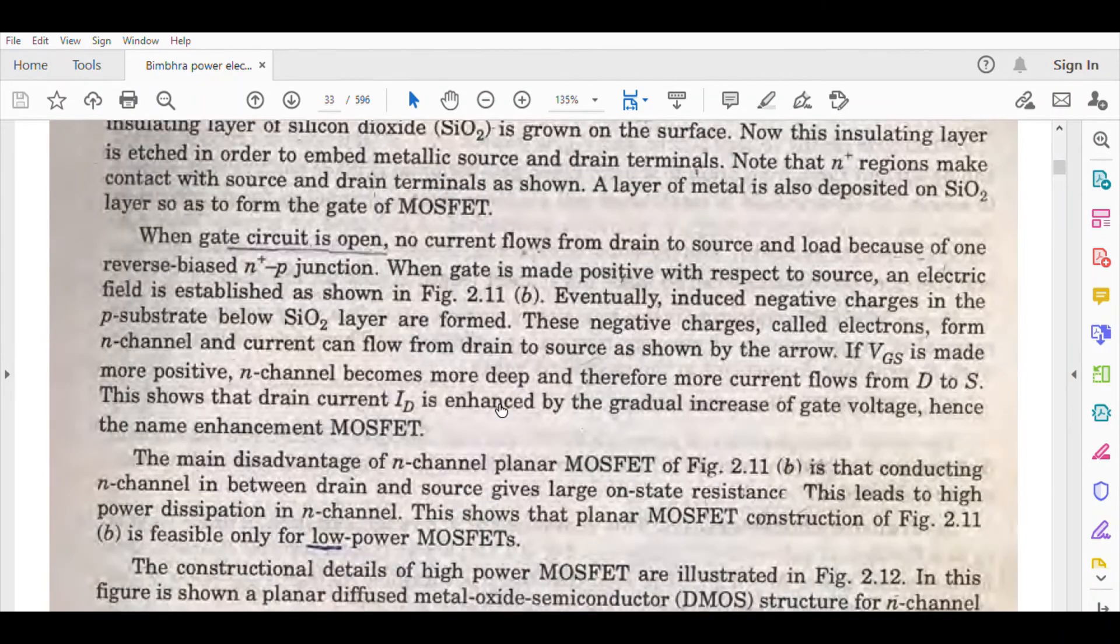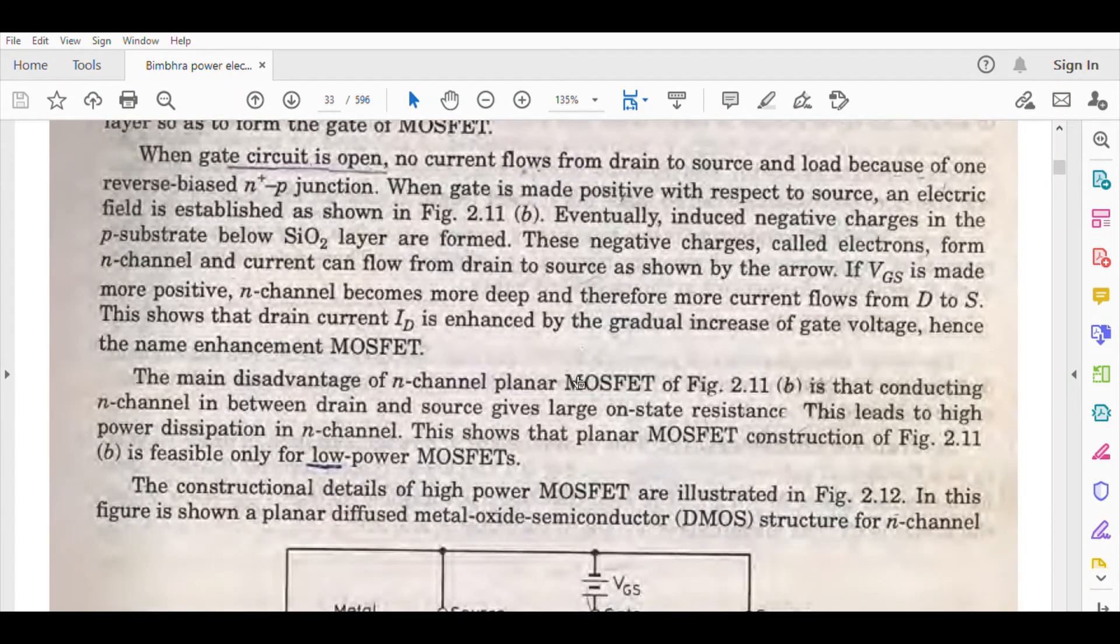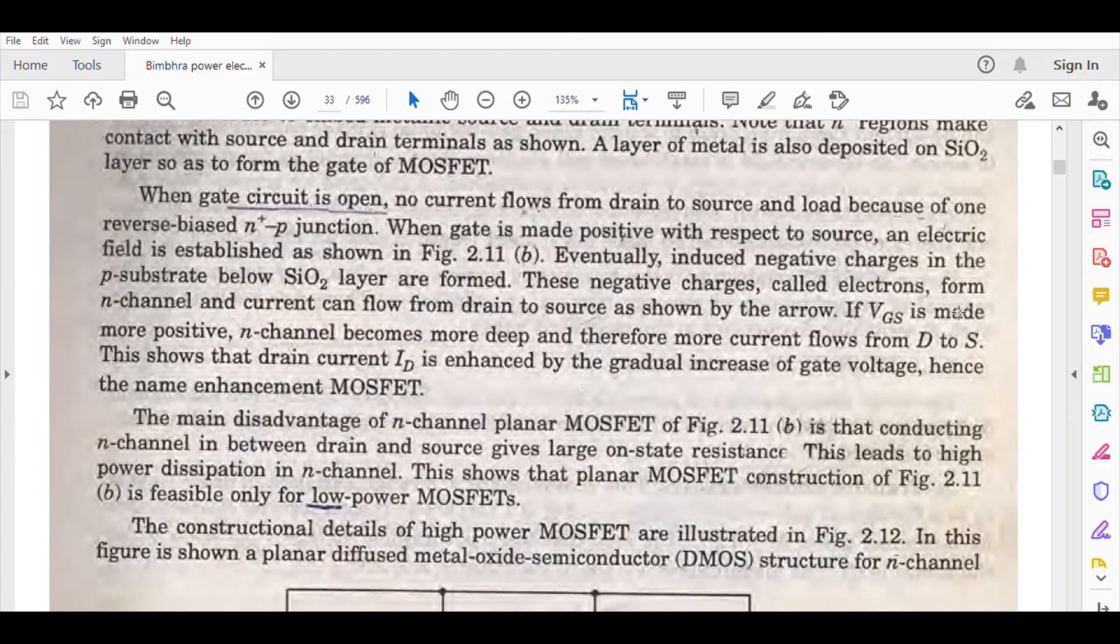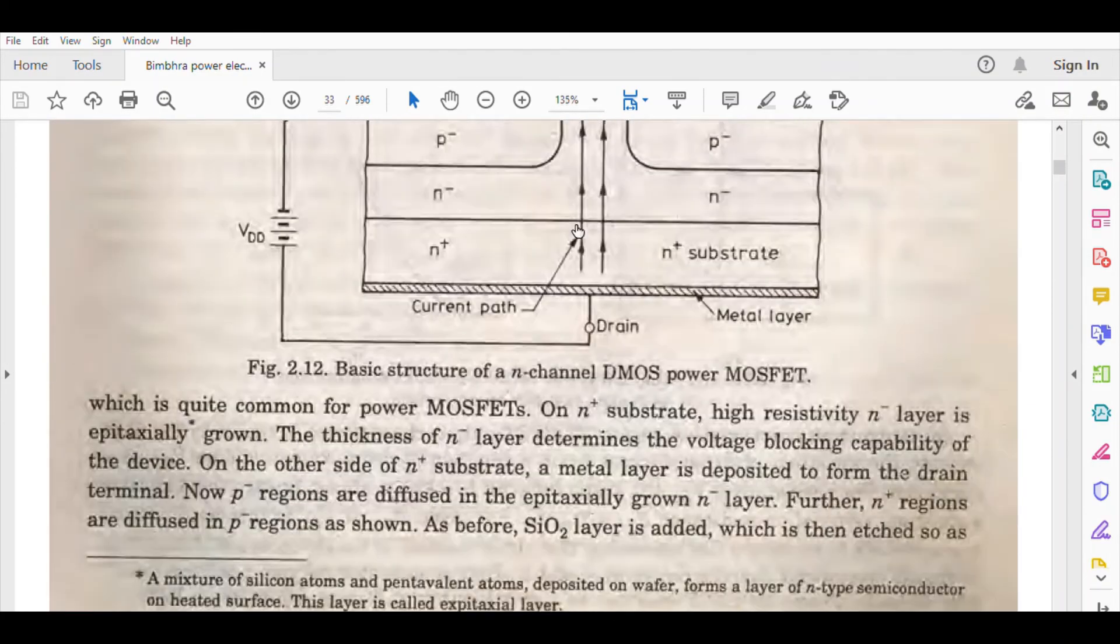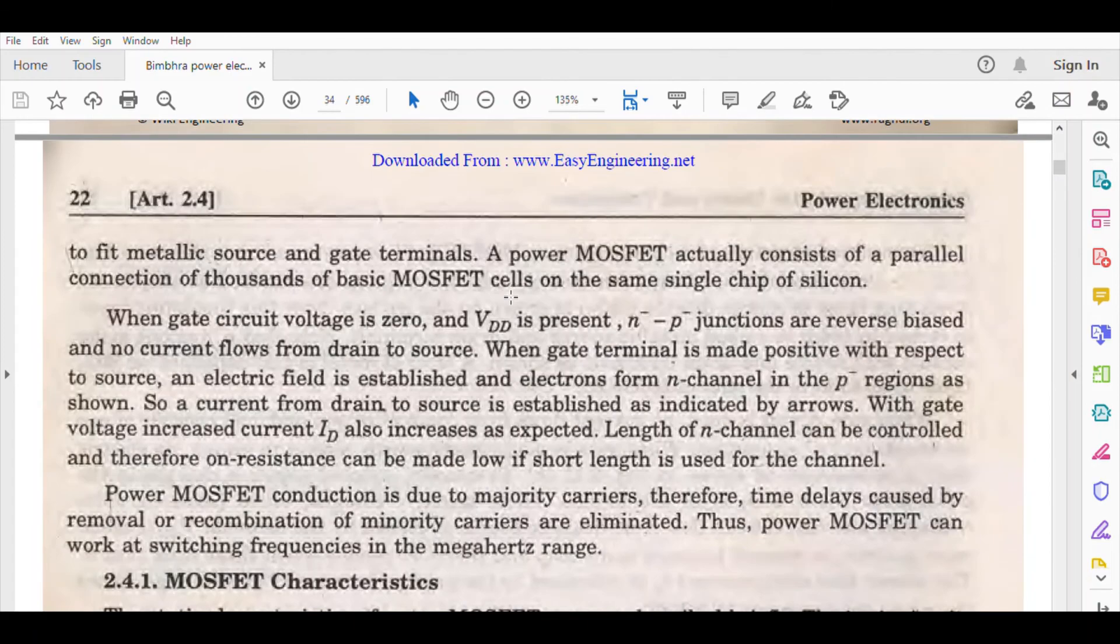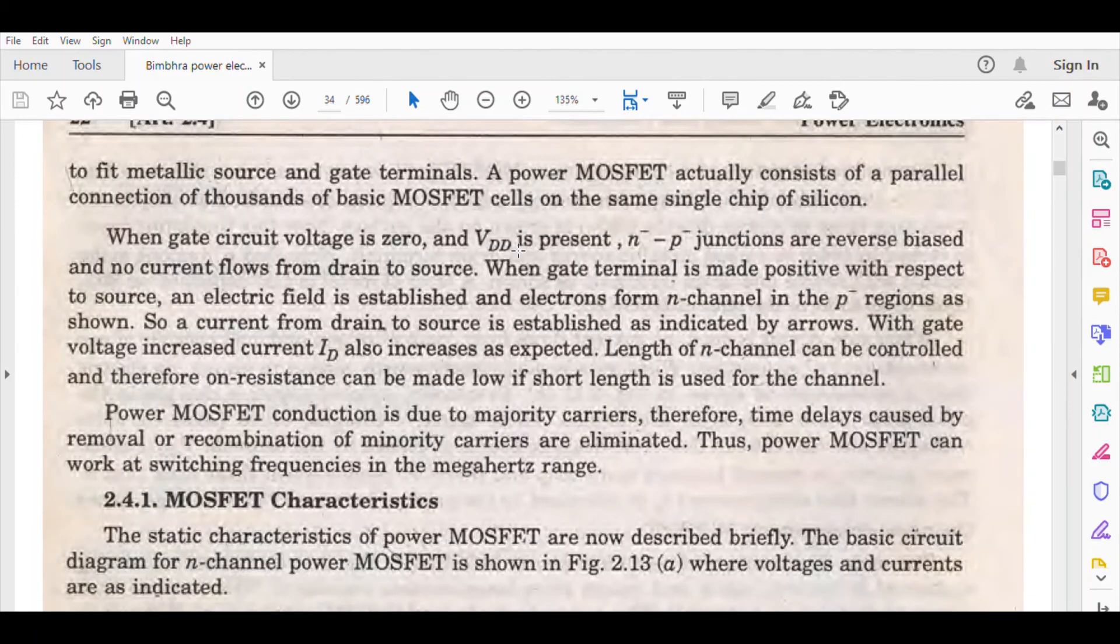The main disadvantage is that drain and source have large on-state resistance, and it is only suitable for low-power applications. VGS is gate-to-source voltage. This is just the construction - you can see it, but it's not too complicated.